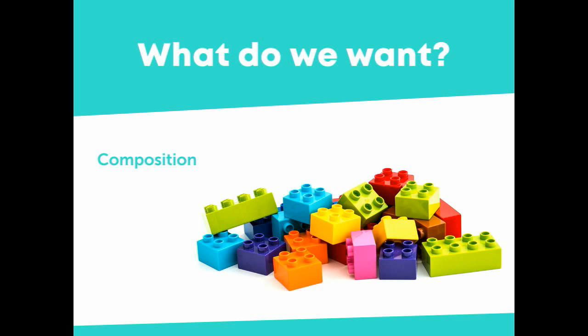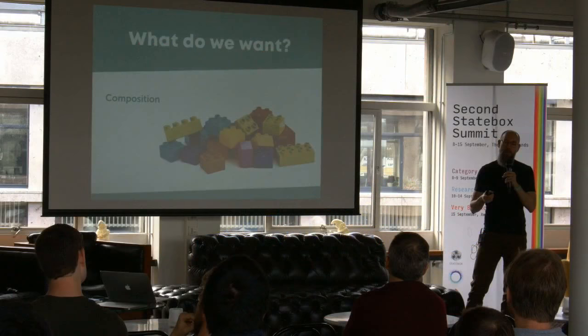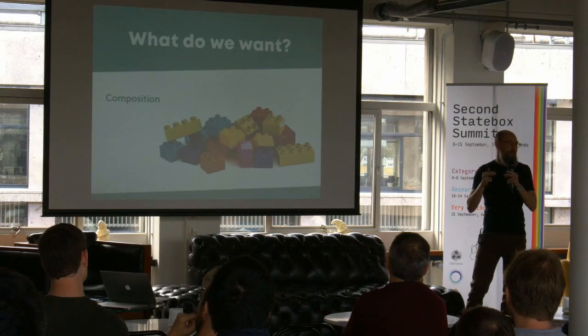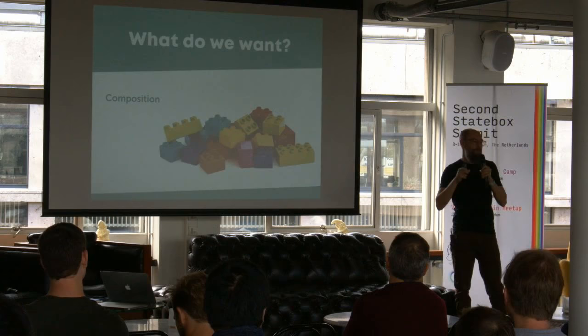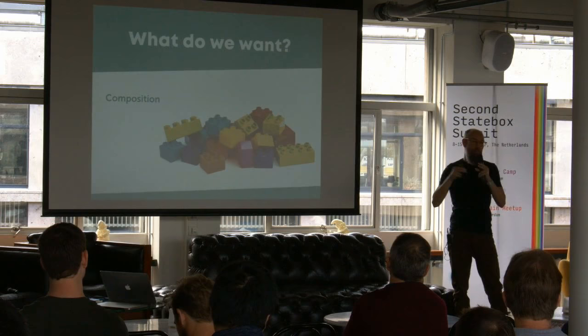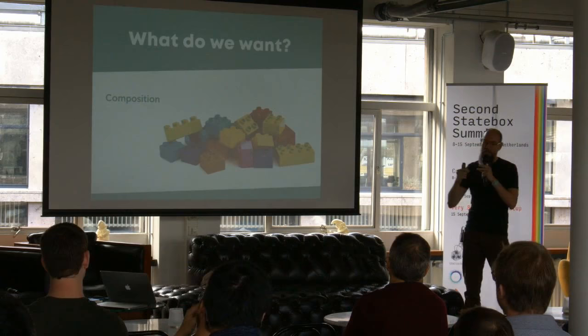This is important and not exactly obvious from the beginning — we want something called composition. What that means is we want to build up small pieces like Lego blocks, fit them together into a bigger piece, and then know that the big piece isn't going to behave in weird ways just because we put those little pieces together. We're working on all these little pieces because it's too daunting to work on the whole thing at once. But we want to make sure that when we put the pieces together, everything is going to stay the same.